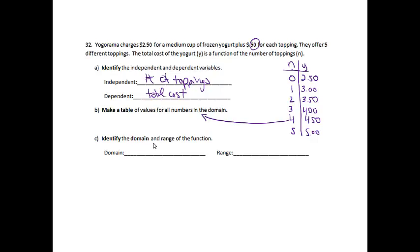And then identifying the domain and range. The domain is just the input. So that's going to be 0, 1, 2, 3, 4, 5. You can also do 0 through 5 if you'd like. And then the range are my outputs. So $2.50, $3.00, $3.50, $4.00, $4.50, $5.00. Or if you'd like to just put $2.50 through $5.00, that would be fine as well.